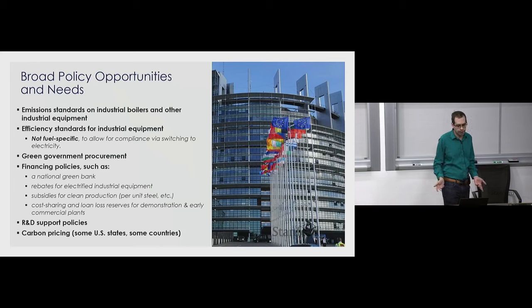Among financial policies, one favorite is a green bank — it's self-sustaining, leverages its money to get private lenders to help provide funds to innovative industrial firms installing clean technology, and is repaid so the green bank can help additional firms without needing new government appropriations every year. There's also R&D support — through national labs working directly on technologies, government funding of academic and private research. And there's carbon pricing, which exists in a number of U.S. states and many countries around the world. This slide also breaks down who in the U.S. has policymaking authority over some of these standards.